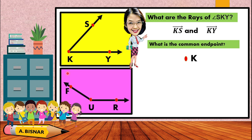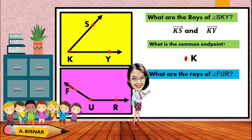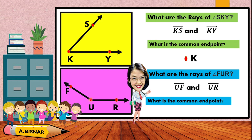How about angle FUR? What are the rays? That's correct — we have ray UF and ray UR. You should always start with the endpoint when naming a ray, which is why you start with U. The common endpoint is point U.